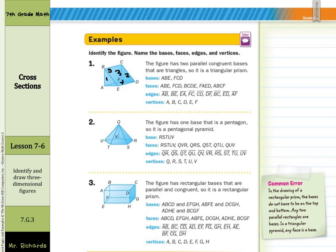As we move on to a guided example, two, the figure has one base that is a pentagon. You can see our base, that's a pentagon, five sides. And the sides are all, the faces are all triangles, and they meet at one point. So we can say that is a pentagonal pyramid. The base, usually it's easiest to do this in alphabetical order. So R, S, T, U, V.